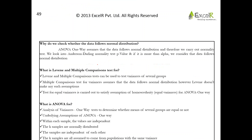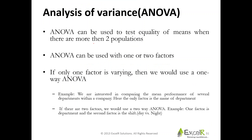Now let me get into ANOVA. When we discussed ANOVA previously, we discussed about one-way ANOVA. What does one-way mean and what does two-way mean? ANOVA can be used to test equality of means when there are more than two populations. If you have greater than two categories or populations, then you go ahead and do ANOVA. ANOVA can be used with one or two factors. If only one factor is varying, then we would use a one-way ANOVA.